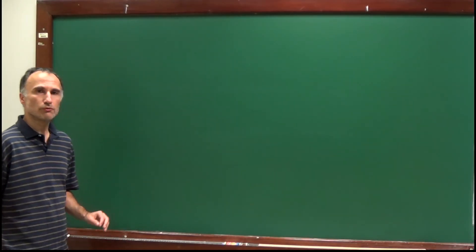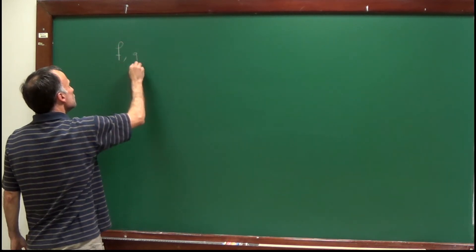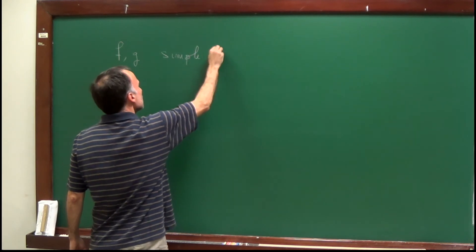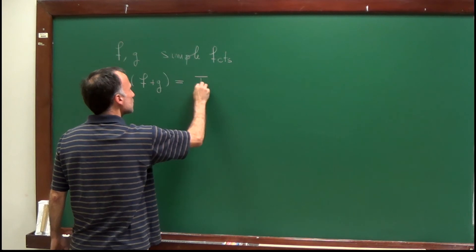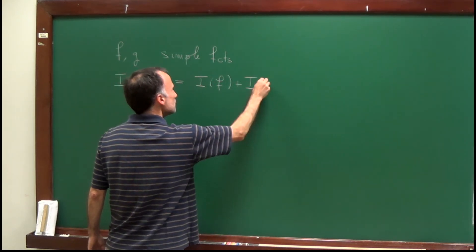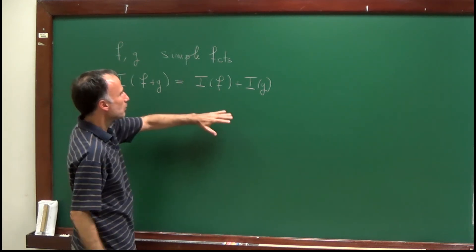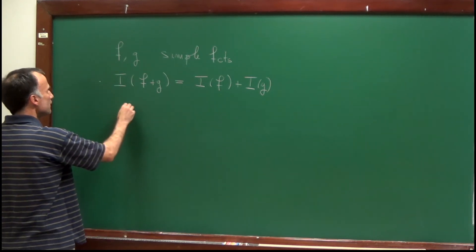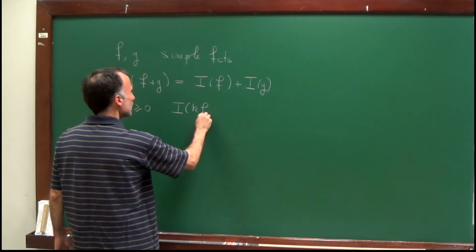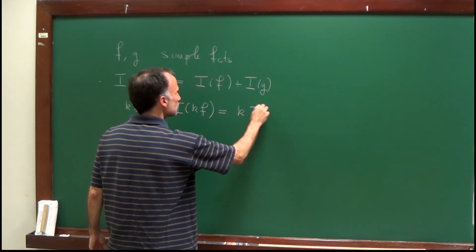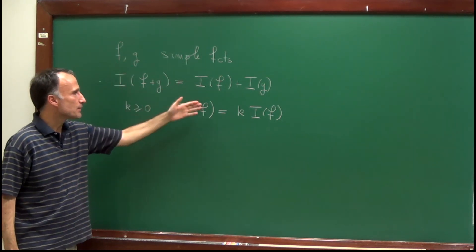Before we start, I will prove certain properties of the integral of simple functions. I want to show that if f and g are simple functions, then the integral of f plus g is equal to the integral of f plus the integral of g. Recall that these integrals might be infinite — if one of them is infinite, we have plus infinity on both sides, and that is allowed. Also, if k is a non-negative real number, I want to prove that ∫(kf) = k∫f. So we are proving that the integral on the space of simple functions is a linear functional.